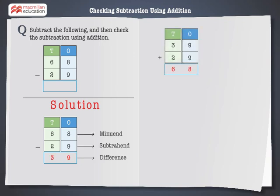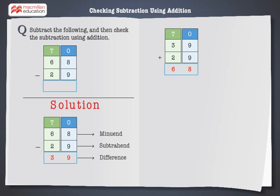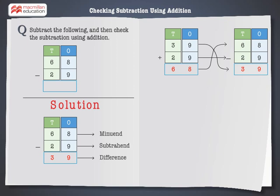Now we have to check our subtraction using addition. Add the difference, which is 39, and the subtrahend, which is 29. We get 68 as the answer, which is also the minuend. Hence, our subtraction is correct.